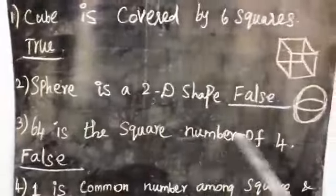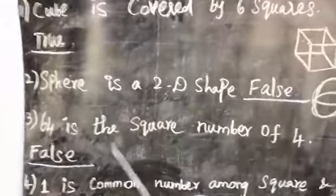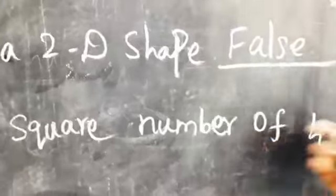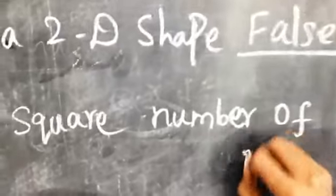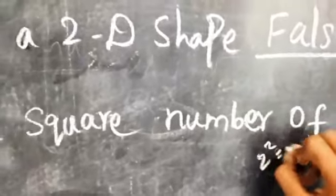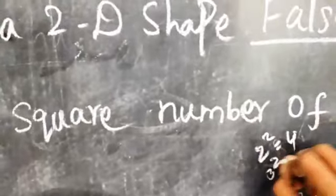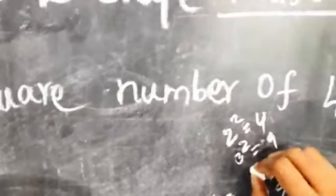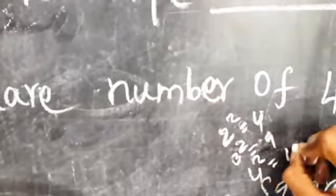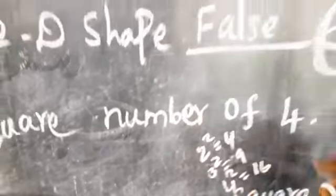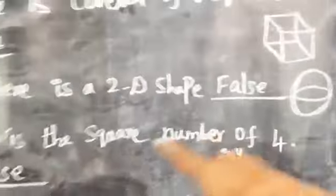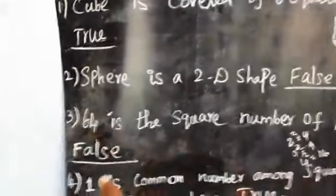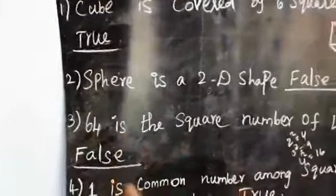Third statement: 64 is the square of number four. The square of number four: one squared is one, two squared is four, three squared is nine, four squared means four fours are sixteen. So four squared equals sixteen. Here 64 will be there, not sixteen. So the statement is false.